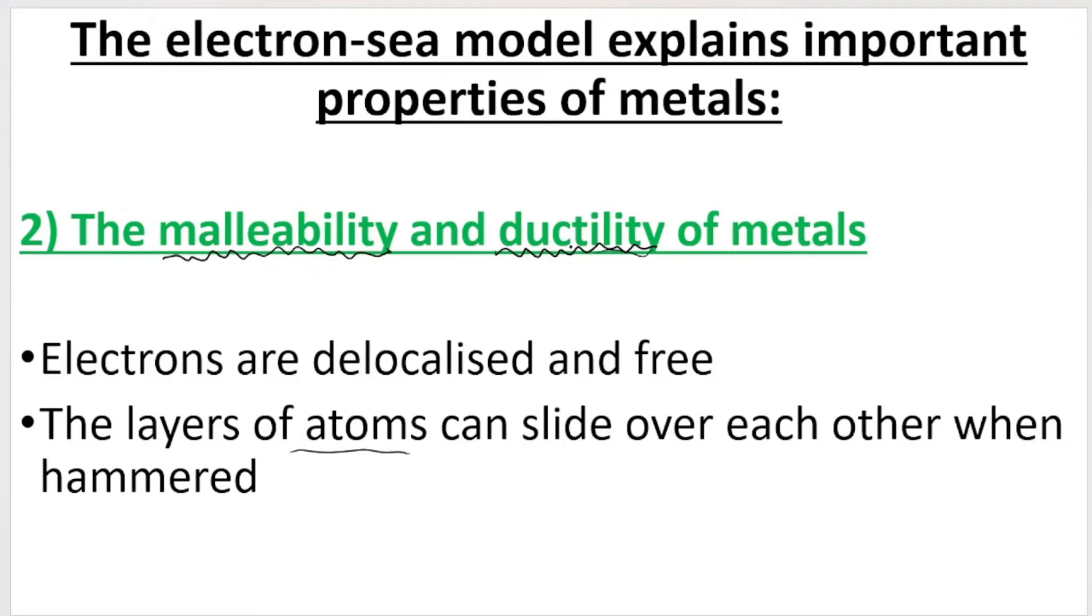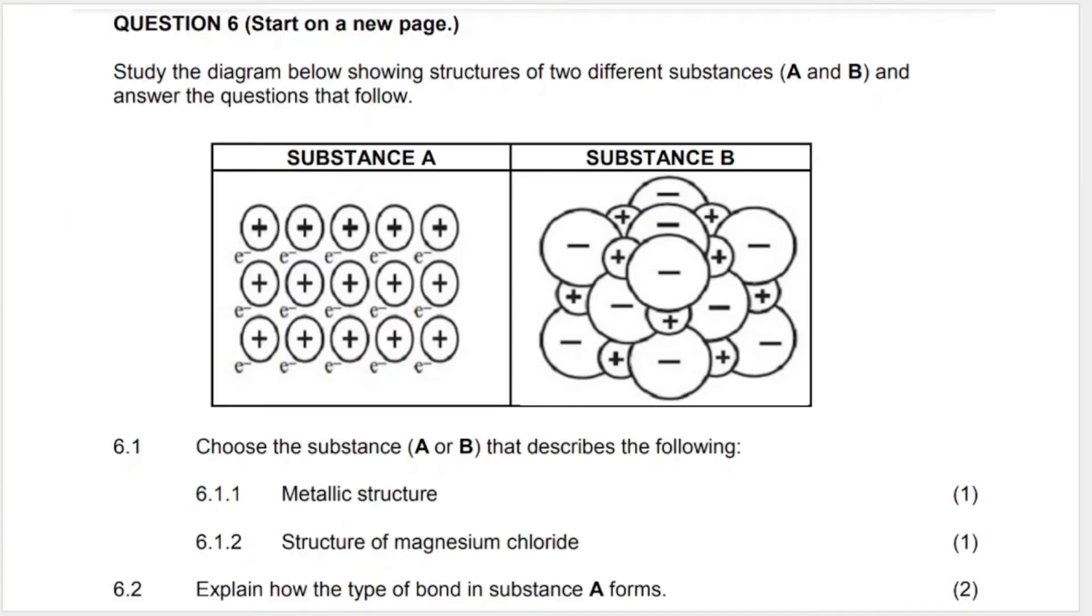Now, I'm quickly going to show you how they can ask metallic bonding in a paper. Over here, we can see a departmental paper. This is a final paper. And they say, study the diagram below. They give you substance A and B and they show the structures of these two different substances. They say, answer the questions. 6.1 says, choose the substance A or B that describes the following. 6.1.1, metallic structure. So if you look at these two different substances, you can clearly see that this represents the electron sea model that I showed you a few minutes ago. So metallic structure would have to be substance A.